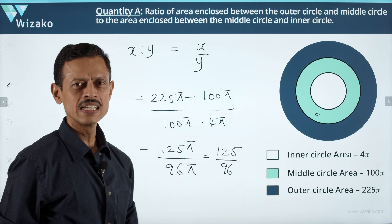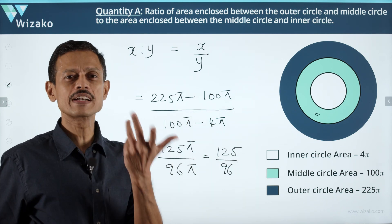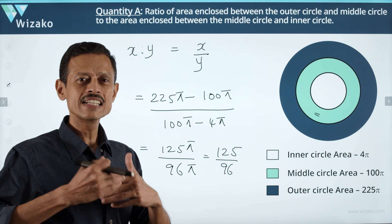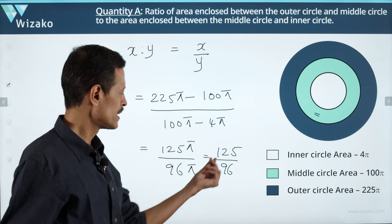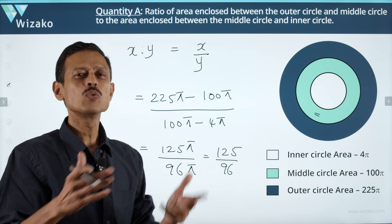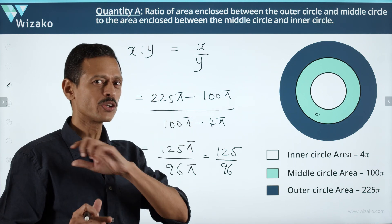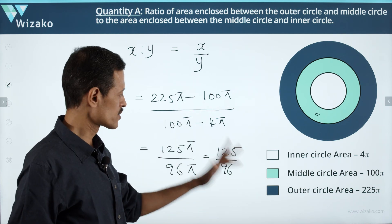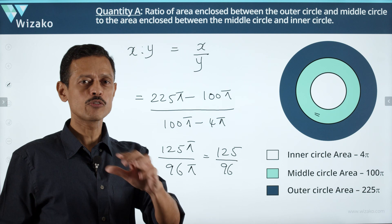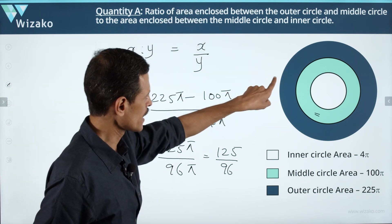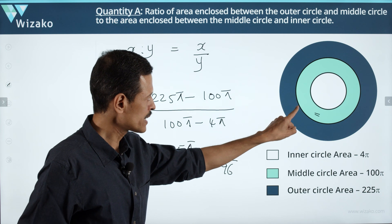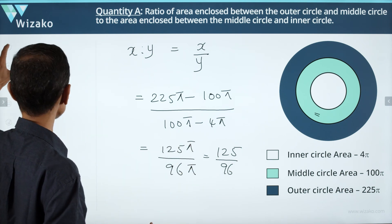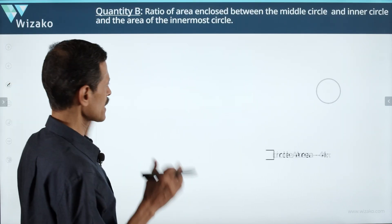We don't need to compute 125/96 exactly. If we round the denominator to 100, we get approximately 1.25, but since the actual denominator is less than 100, the value is a little more — roughly 1.3. If the numbers were very close we'd compute exactly, but this estimate is sufficient for now.